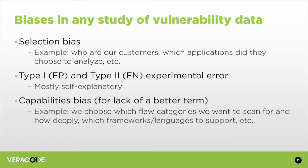Another bias is experimental error. When you're scanning software — whether static, dynamic, or some other form — you're going to have false positives and false negatives. A false positive is when you detect something that turns out not to be a real problem. A false negative is when you fail to detect something that actually is a problem. Whether it's a human or an automated tool, there are going to be things flagged inadvertently and things missed. It doesn't make the data not valuable, but just keep that in mind.